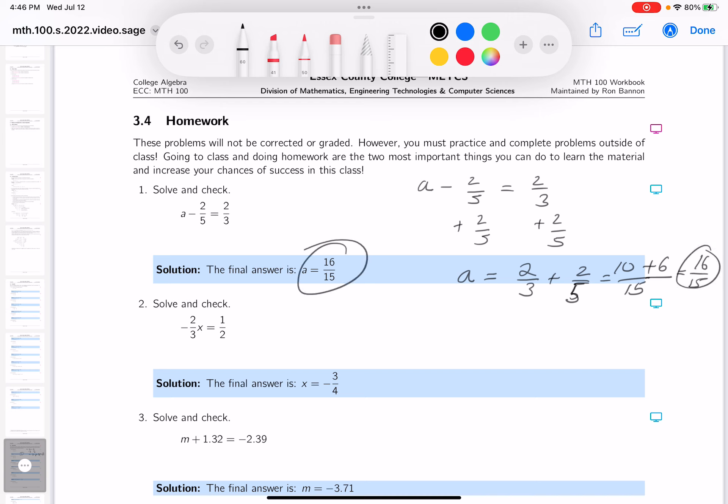What do you get? Sixteen-fifteenths. Are we getting the same result? We're getting the same result, which is what we expect to see. Thank you.